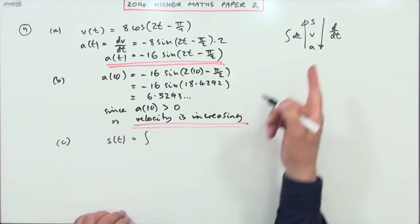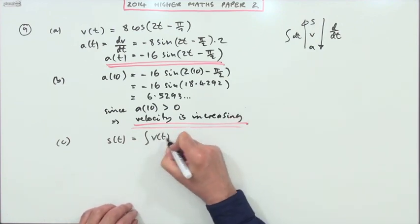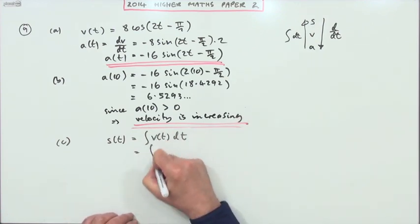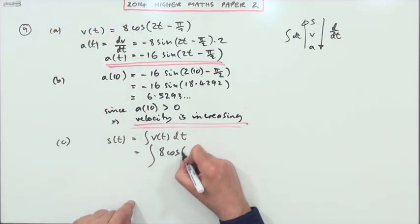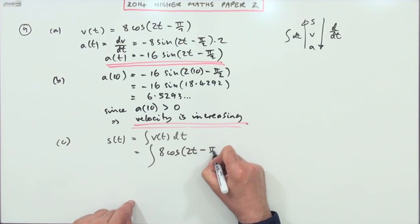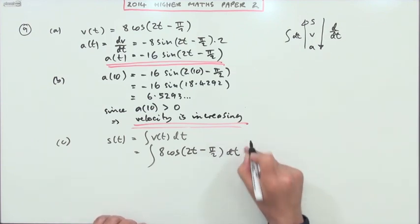So how are we going to define this displacement? We'll integrate the velocity. Integrate V(t) with respect to t. So what was this thing? Here it is, 8 cos(2t - π/2) dt.